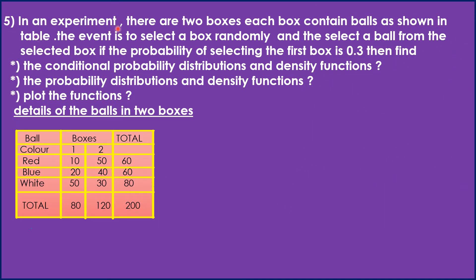The fifth question: in an experiment there are two boxes, each box containing balls as shown in a table. The event is to select a box randomly and then select a ball from the selected box. If the probability of selecting the first box is 0.3, find the conditional probability distributions and density functions.